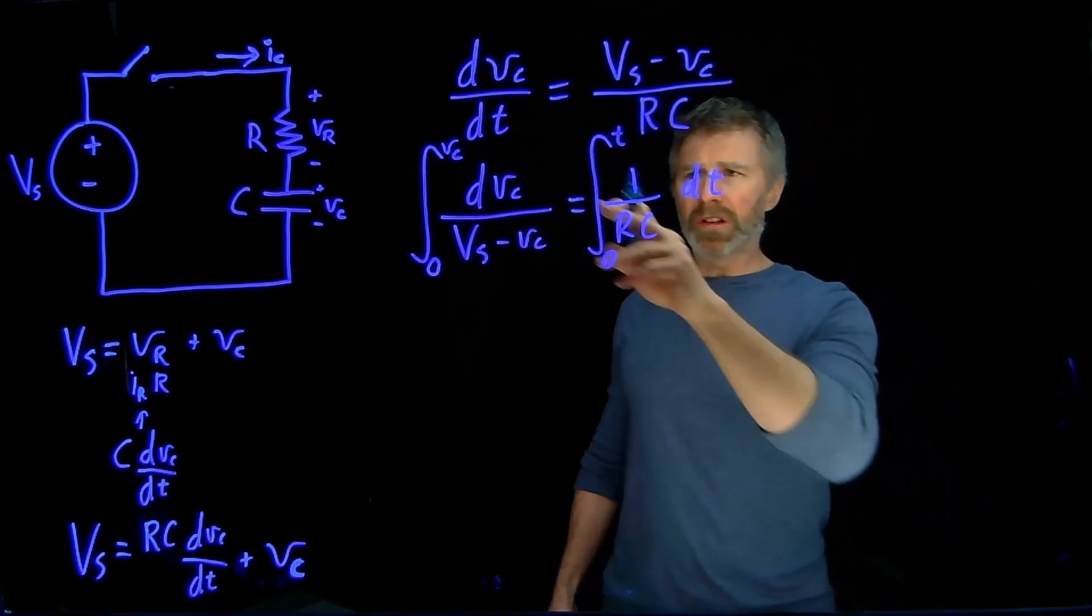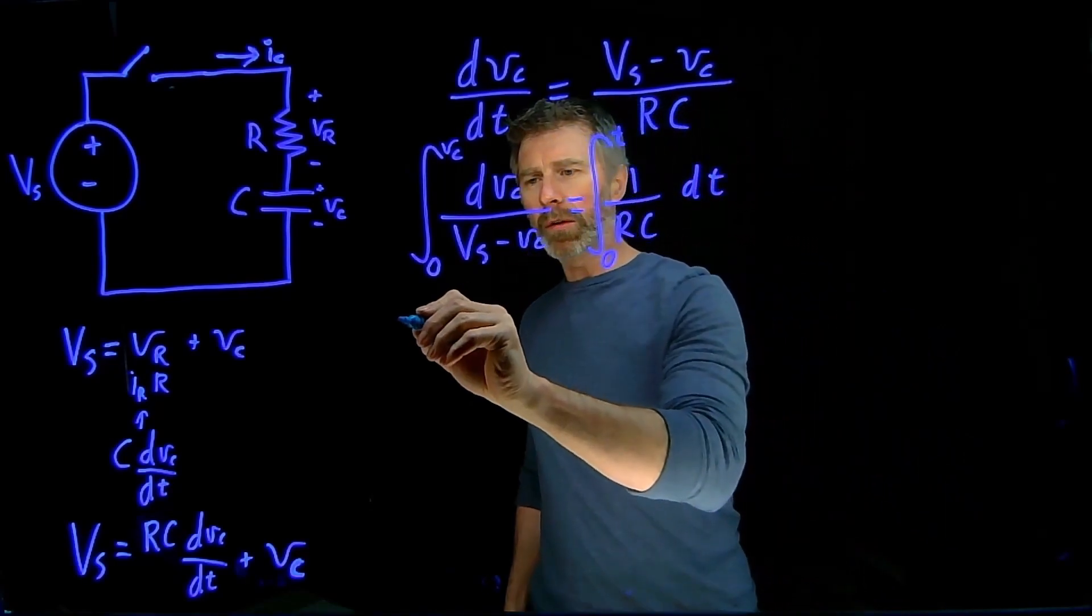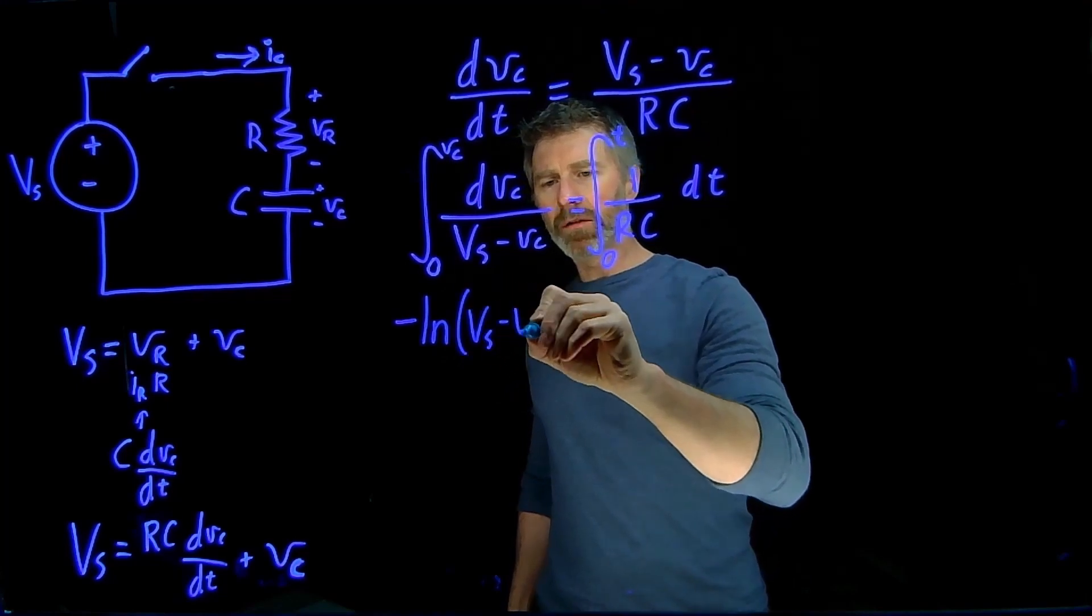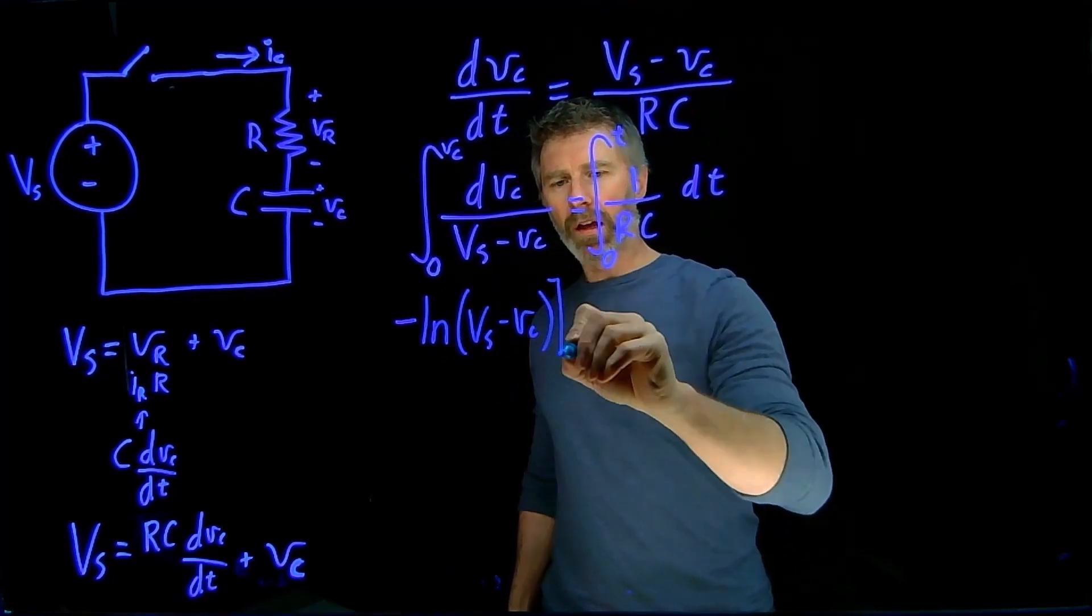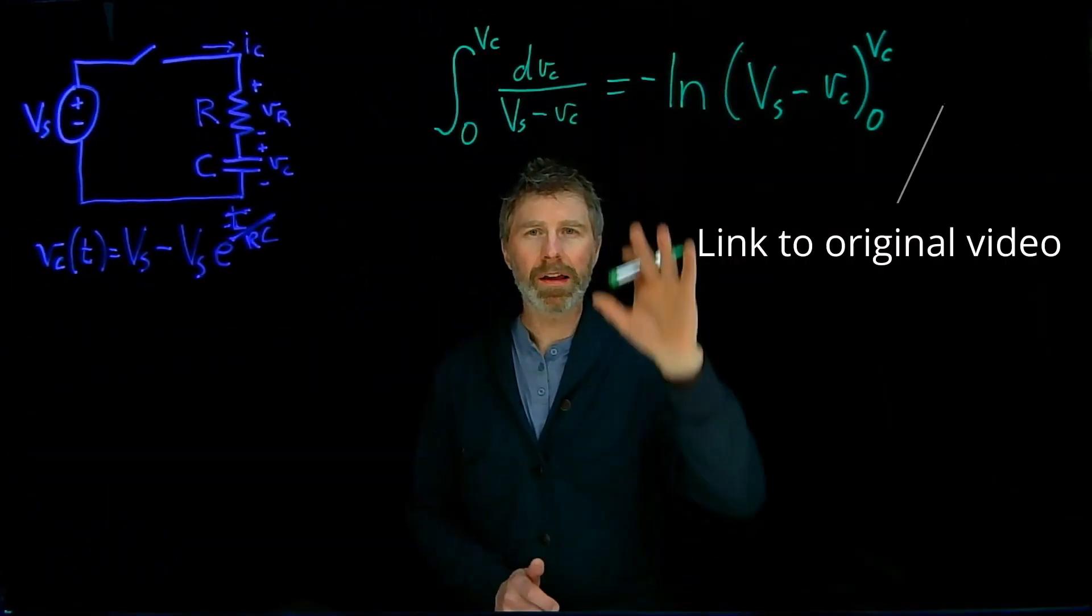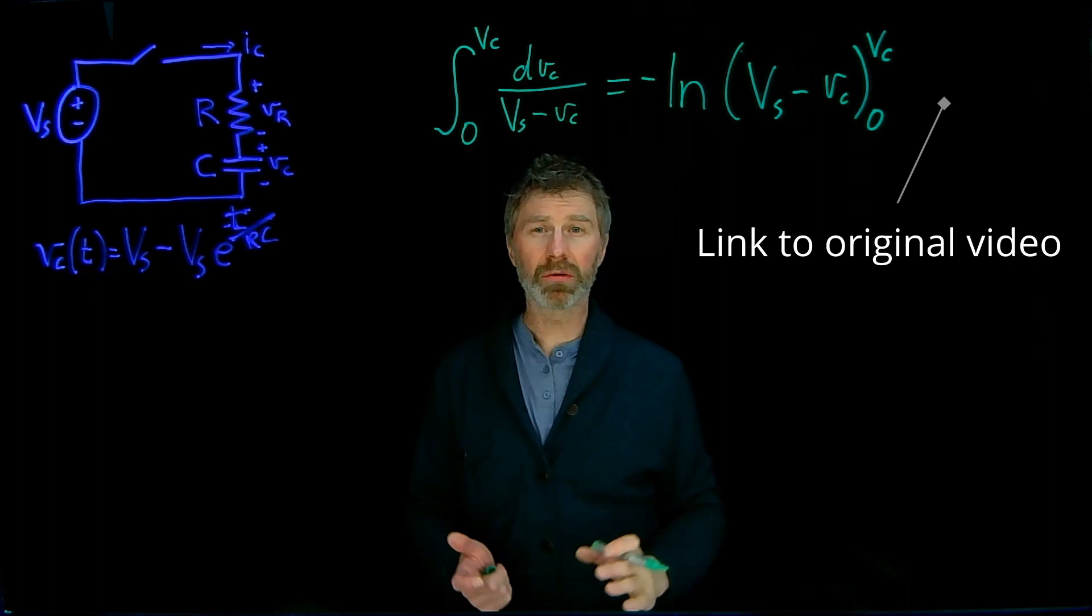Now, I don't want to go into the details of doing this integration, but what we'll end up with is negative log of Vs minus Vc, and this will be from 0 up to Vc, and I didn't show why this is true in that video, so let's see why.